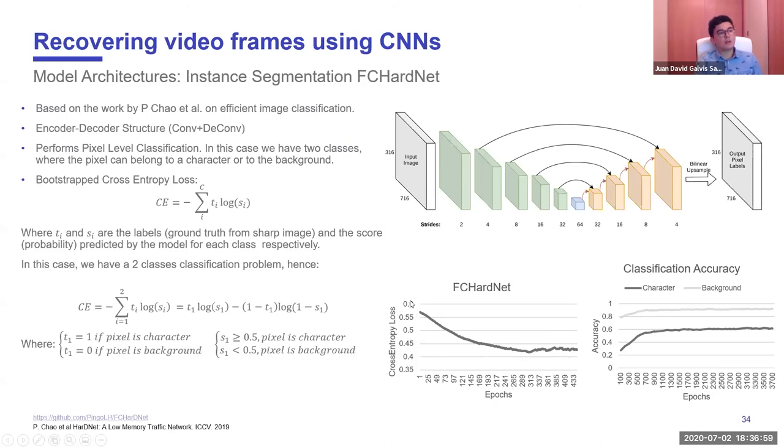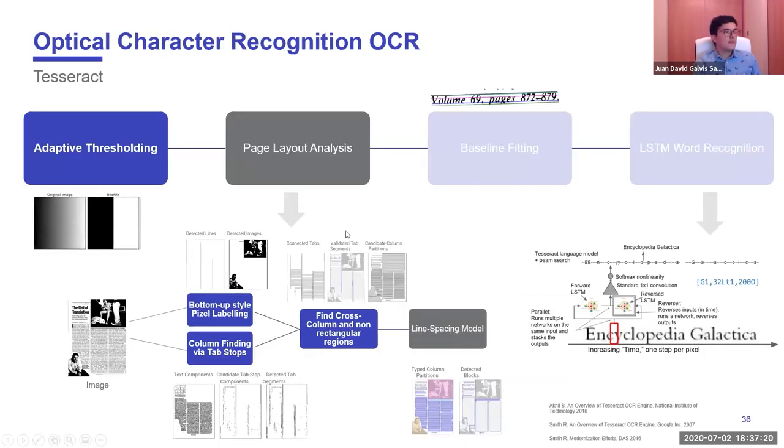Then we do a deconvolution process to upsample again this feature map into an image. At the end, the output we have is pixel labels. So it will tell us what each pixel belongs to, whether it belongs to a character or it belongs to the background. We use cross-entropy loss in this case. We can see in the plots how first loss is decreased and how also the accuracy for each one of the classes is incremented. We're detecting pixels that belong to the characters with a 60% accuracy.